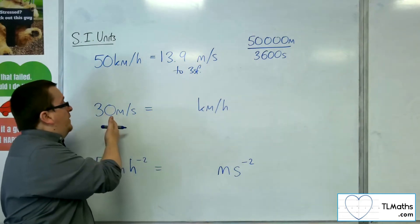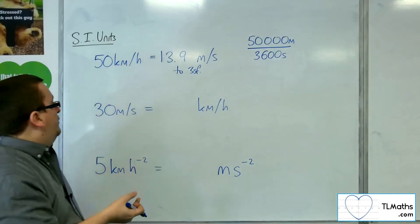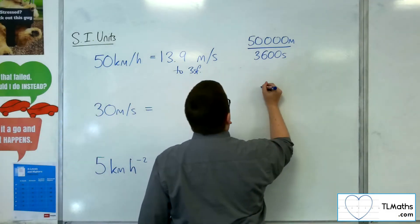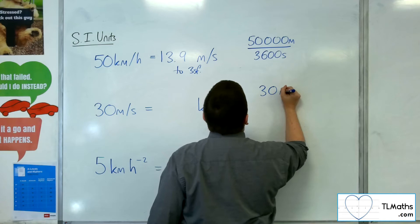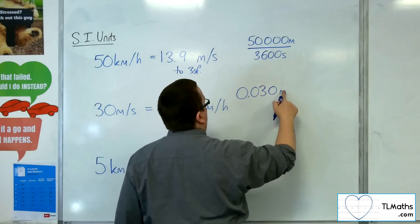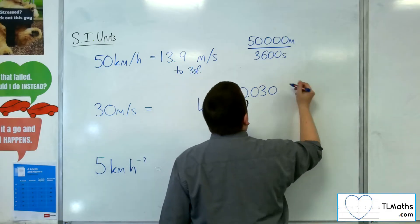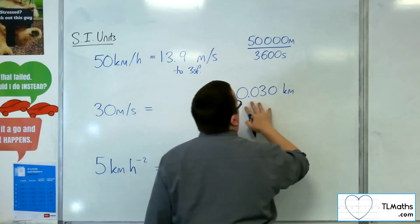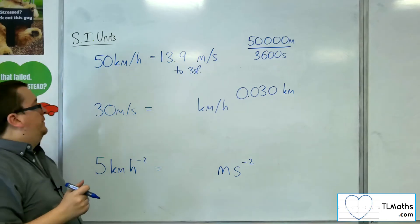So now if we want to convert 30 metres per second into kilometres per hour, then I know that 30 metres is actually 0.030 kilometres, or just 0.03 kilometres.